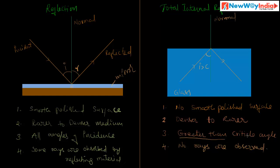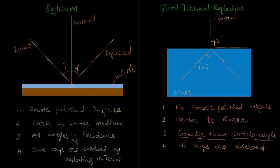The critical angle is defined as follows: when a ray passes from a denser medium to a rarer medium, the angle of incidence for which the refracted ray travels parallel to the surface of the denser medium — meaning the angle between the refracted ray and the normal is 90 degrees — that angle of incidence is called the critical angle.